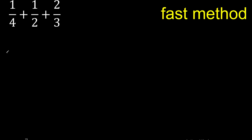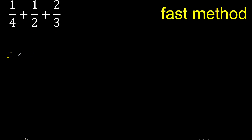First multiply: 4 x 2 is 8, 8 x 3 is 24.